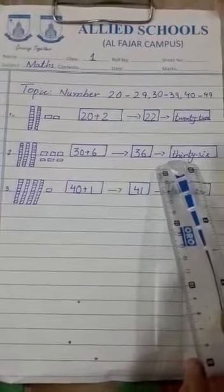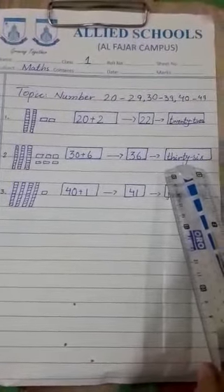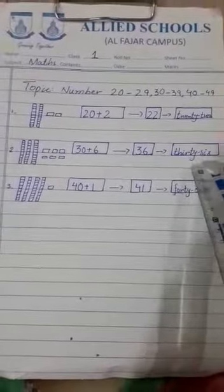Write the number name. T-H-I-R-T-Y, 30. S-I-X, 6. 36.